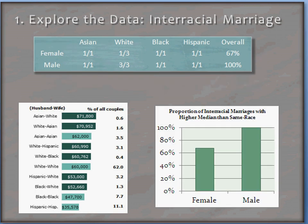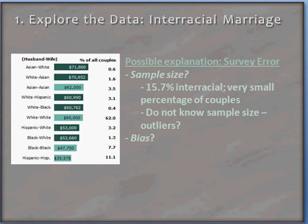For females overall, 67% of interracial pairings were better than same-race pairings, and for males, 100% were. Visualizing this data with a graph presents an interesting picture — it seems that interracial marriage itself might be predictive of a higher median income, that is, that interracial couples earn more.